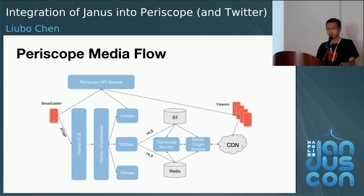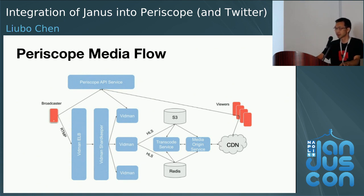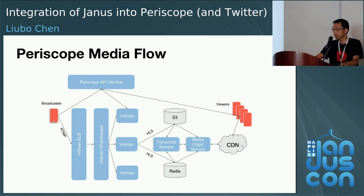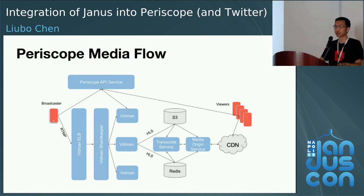When a viewer wants to watch the broadcast, it talks to the API service first to get broadcast information including the master playlist file name. Then it tries to download the master playlist from our MOSS — Media Origin Service. Based on its own bandwidth and other conditions, it chooses the right variant and sends a request to MOSS and further to our transcode service. We support multi-bitrate — we are transcoding the video on the fly to support multiple bitrates.